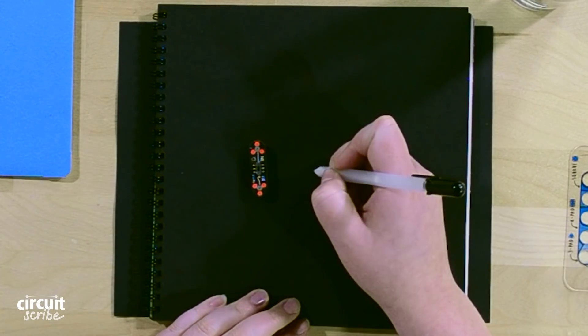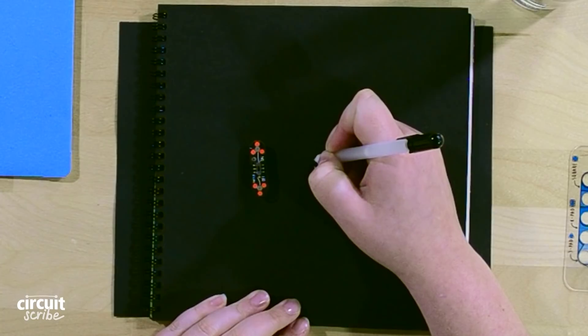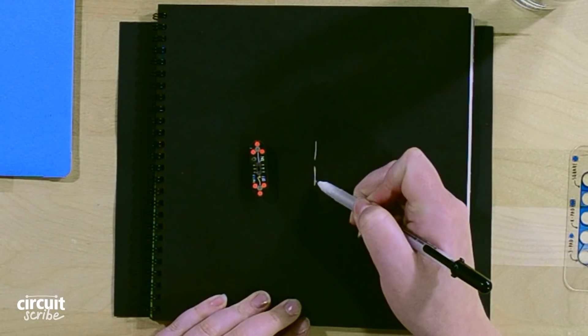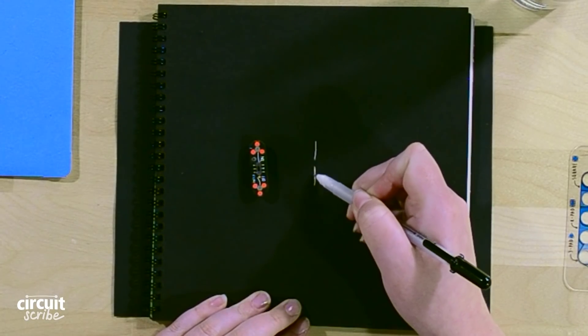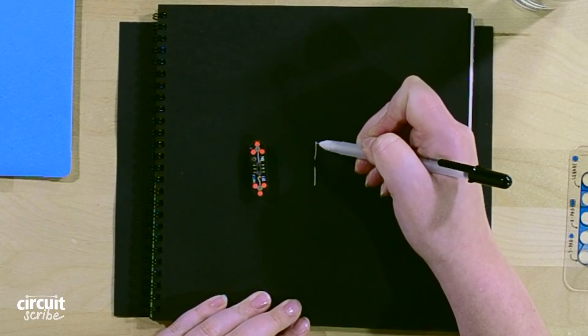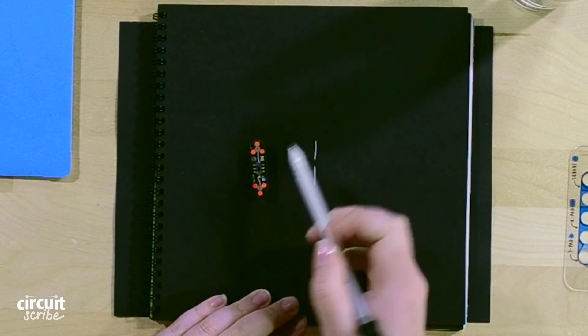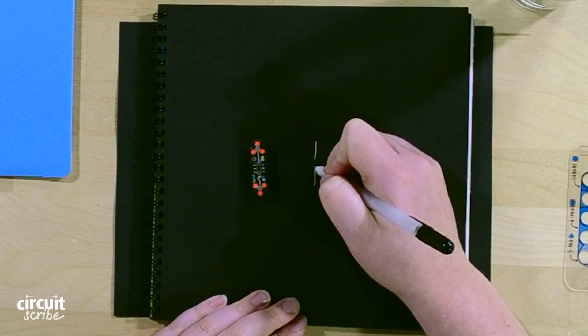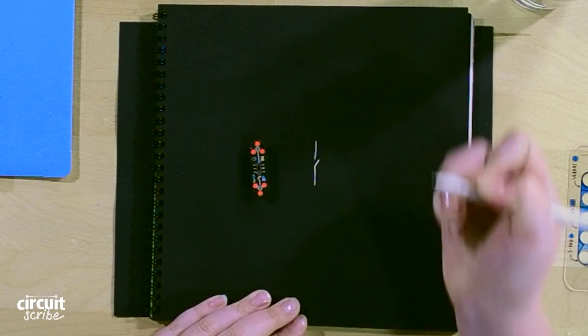What a switch looks like on the inside is kind of like this guy. You got one piece of conductive material here and one piece of conductive material here connecting to each of the feet, and then you have the actual switch right there.